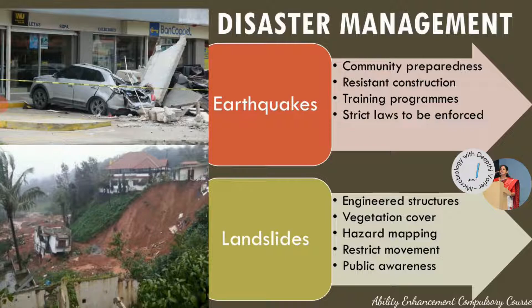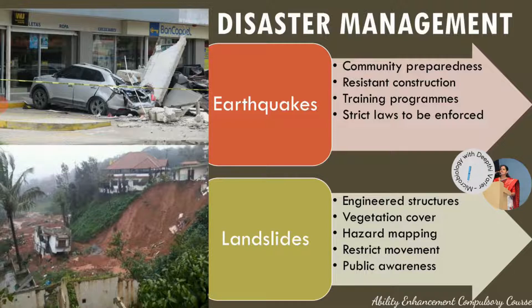Earthquakes are very common. They are a type of natural disaster that can occur at any time of the year. Even recently we had the huge earthquake in Turkey and Syria — in fact there were multiple earthquakes over a period of a week. These earthquakes caused a huge amount of loss in terms of people. More than 50,000 people have been killed and a lot of people have been displaced from their homes, with many buildings coming down.